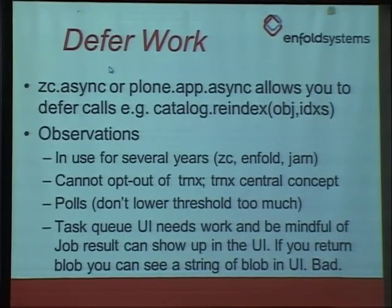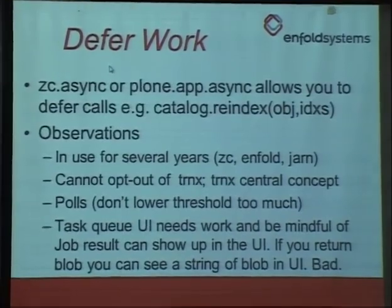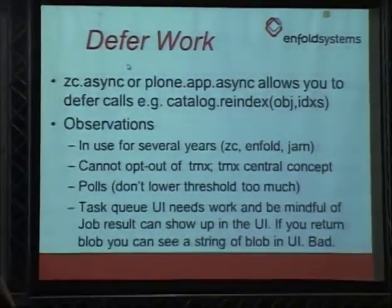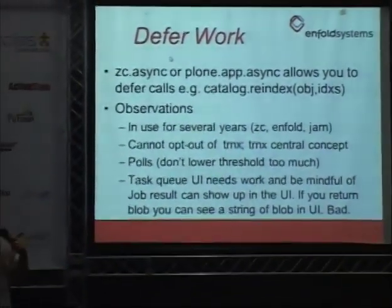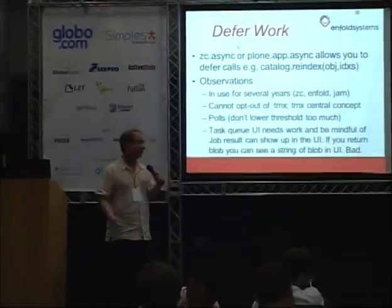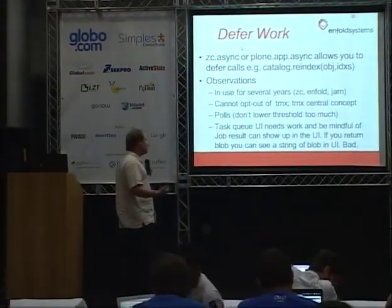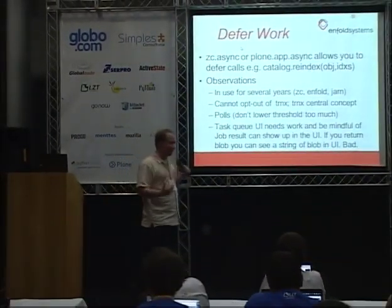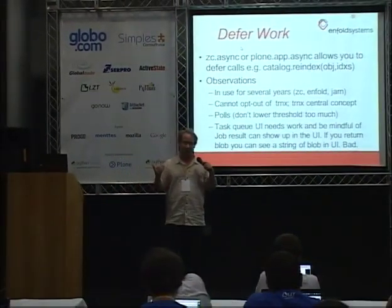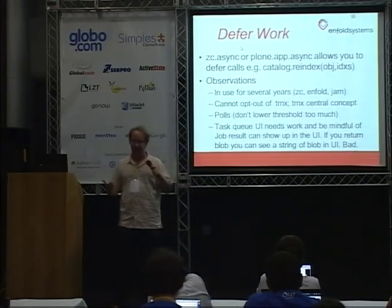Some problems with async: polling is fine, but don't try to make it real-time by decreasing the polling interval to something like 0.001. That's just not how the system works. You cannot opt out of transactions — if you have any doubt that you need transactions or you don't want transactions, you can't use this.